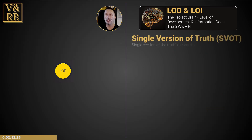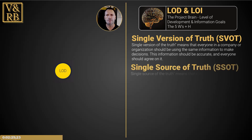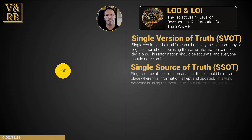Single version of the truth means that everyone in a company or organization should be using the same information to make decisions. This information should be accurate and everyone should agree on it. Single source of the truth means that there should be only one place where this information is kept and updated, so everyone is using the most up-to-date information and it's the same for everyone.